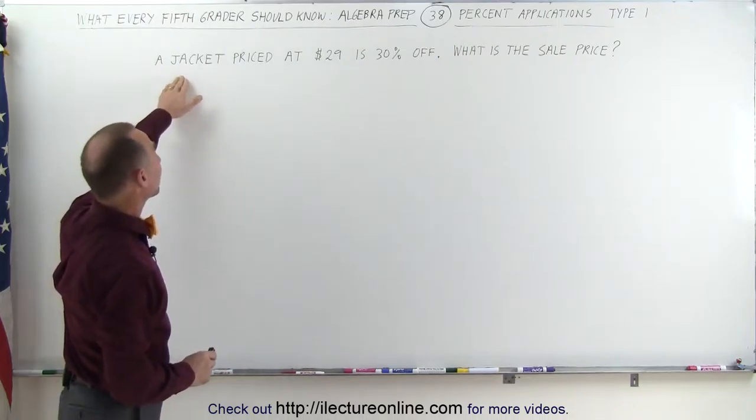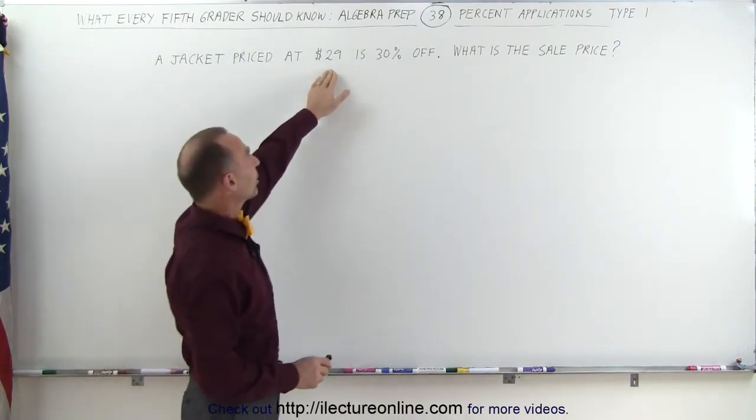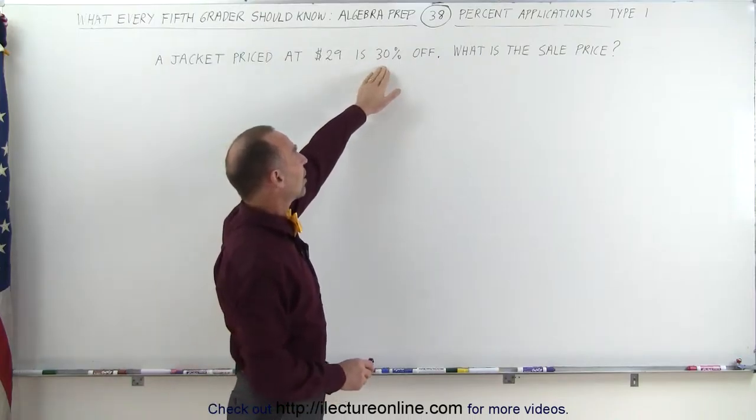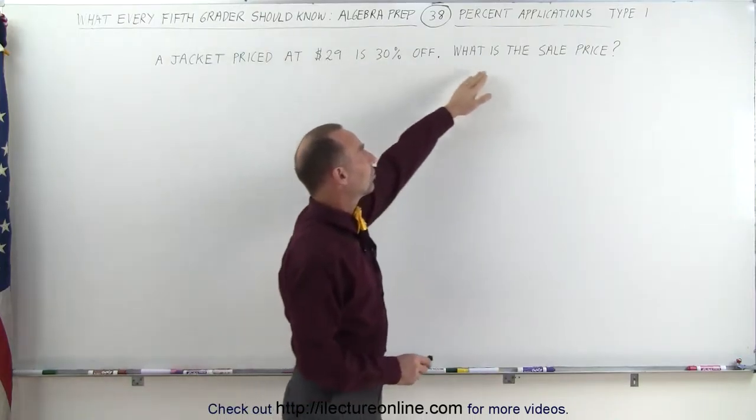We have something priced at the original price. The jacket is priced at $29 and it's 30% off the regular price. What is the sale price?